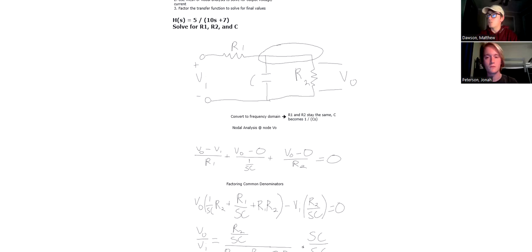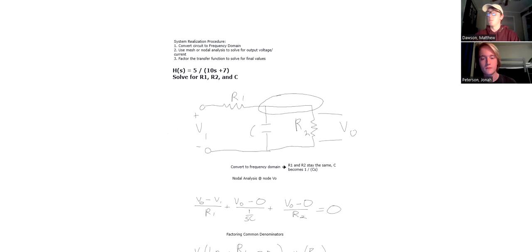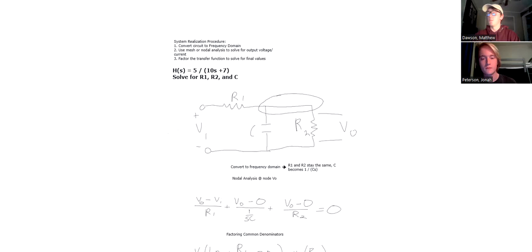In the recap, you're going to pretty much follow the same procedure for every single system realization that you're going to do. Obviously for every single circuit is going to be different, whether mesh or nodal is going to be optimal. For this one, Jonah loves using nodal, so this was a perfect example to use nodal as well. But you could have definitely solved a similar circuit using mesh as well. So thank you guys for tuning in. I hope this helped with all of your system realization needs. Thank you.